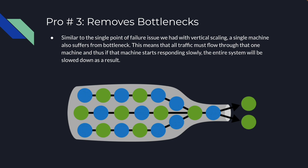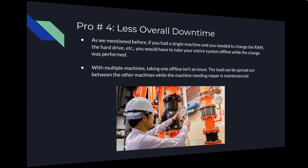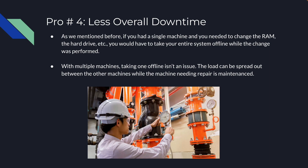Another pro is that we're able to remove bottlenecks. Similar to the single point of failure issue, a single machine also suffers from bottlenecks — all traffic must flow through that one machine, so if it starts responding slowly, the entire system slows down. If we have multiple machines, we have much less of this issue.